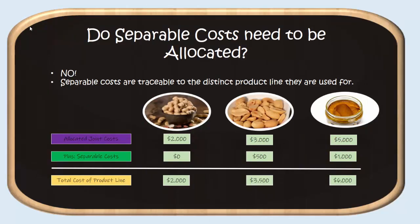Do we need a system to allocate the separable costs? The answer is no, because they are identifiable. No one is going to make the mistake of putting the cost of a peanut butter jar into unsalted peanuts, which are sold in a bag — you don't need jars. It's very easy to trace these costs directly to the products. The joint costs, the raw peanuts in this case, do need a system of allocation to get into individual product lines. For separable costs, you don't need any kind of system. You would just track and say we used X amount of jars to make peanut butter, we used X amount of pounds of salt to make salted peanuts, and add this identifiable separable cost to the allocated joint costs to get the total cost for that product line.